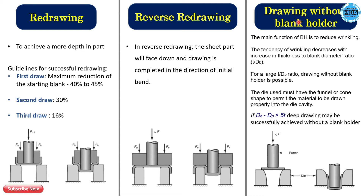In drawing without a blank holder, we do not use the blank holder to hold the blank sheet. The main function of the blank holder is to reduce wrinkling, which is a defect in the drawing process. The tendency for wrinkling decreases with increasing the thickness-to-blank-diameter ratio.